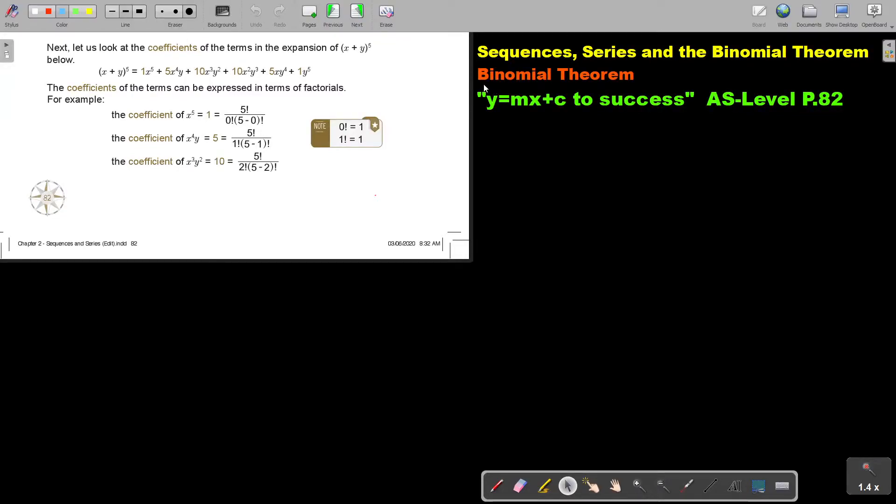In this video, we will continue with the Binomial Theorem. You will find this on page 82 in the Namibia AS Level Mathematics Textbook Y equals MX plus C to success. Next, let us look at the coefficients of the terms in the expansion of X plus Y to the power of 5 below.